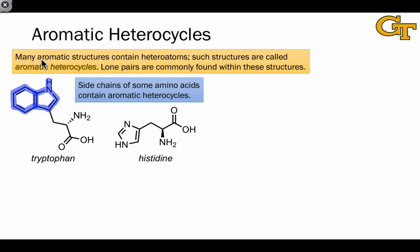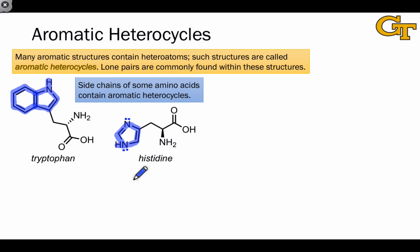The amino acid histidine also features a heterocycle within its structure. This one contains two nitrogen atoms and is referred to as an imidazole ring. Imidazole is interesting for a number of reasons, but one interesting question concerns the nature of these two nitrogens, both of which have lone pairs. Which nitrogen is more basic than the other? By the end of this lesson, you'll be able to answer this question straightforwardly.